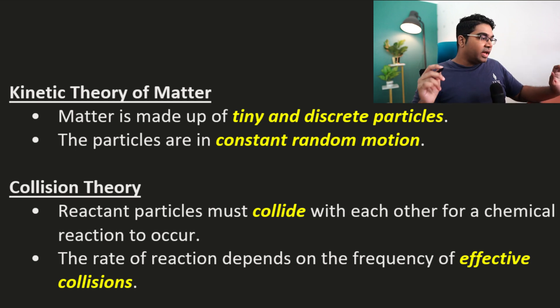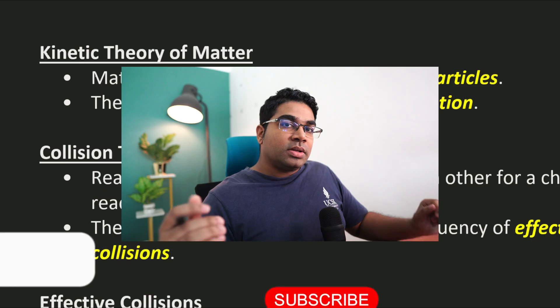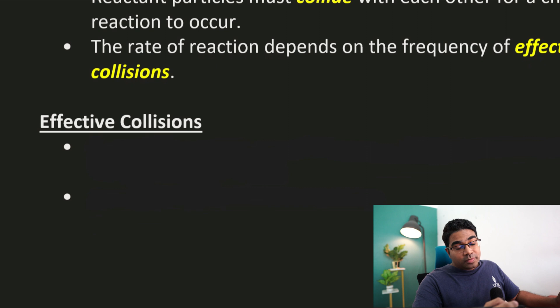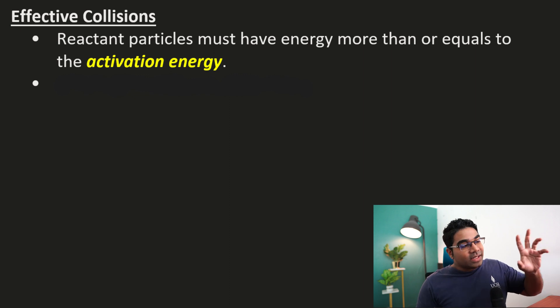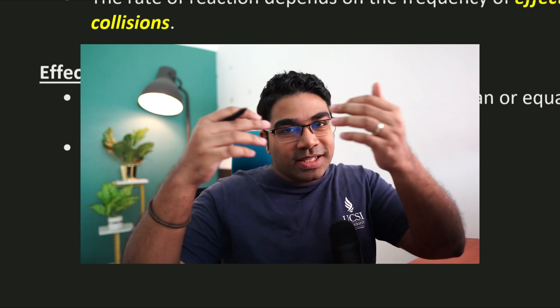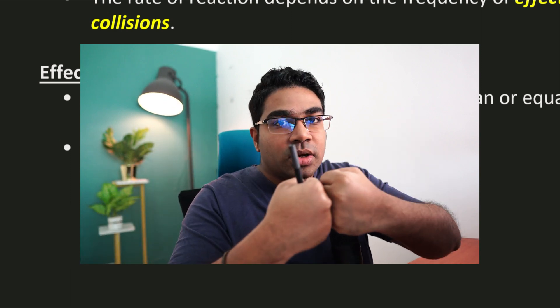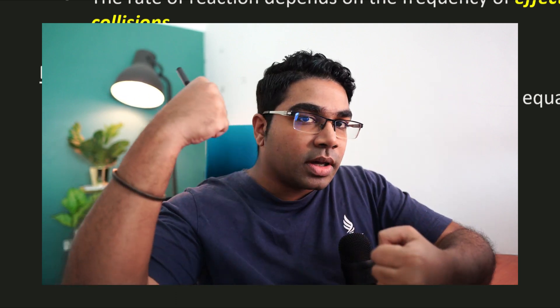Collision theory also states that the rate of reaction depends on the frequency of effective collision. Effective collision is when the reactant particles collide with energy that is equal to or more than the activation energy. This concept of activation energy is like an energy barrier — the particles must collide with enough energy for the reaction to take place. This minimum energy required is called the activation energy.